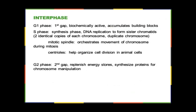G1 is your first gap — the cell is biochemically active and accumulating building blocks. During S phase, DNA replication occurs to form sister chromatids, which are two identical copies of each chromosome. The mitotic spindle helps orchestrate the movement of chromosomes during mitosis. In animal cells, centrioles help organize cell division, but centrioles are not present in plant cells. During G2, your second gap, you replenish energy stores and synthesize proteins for chromosome manipulation.